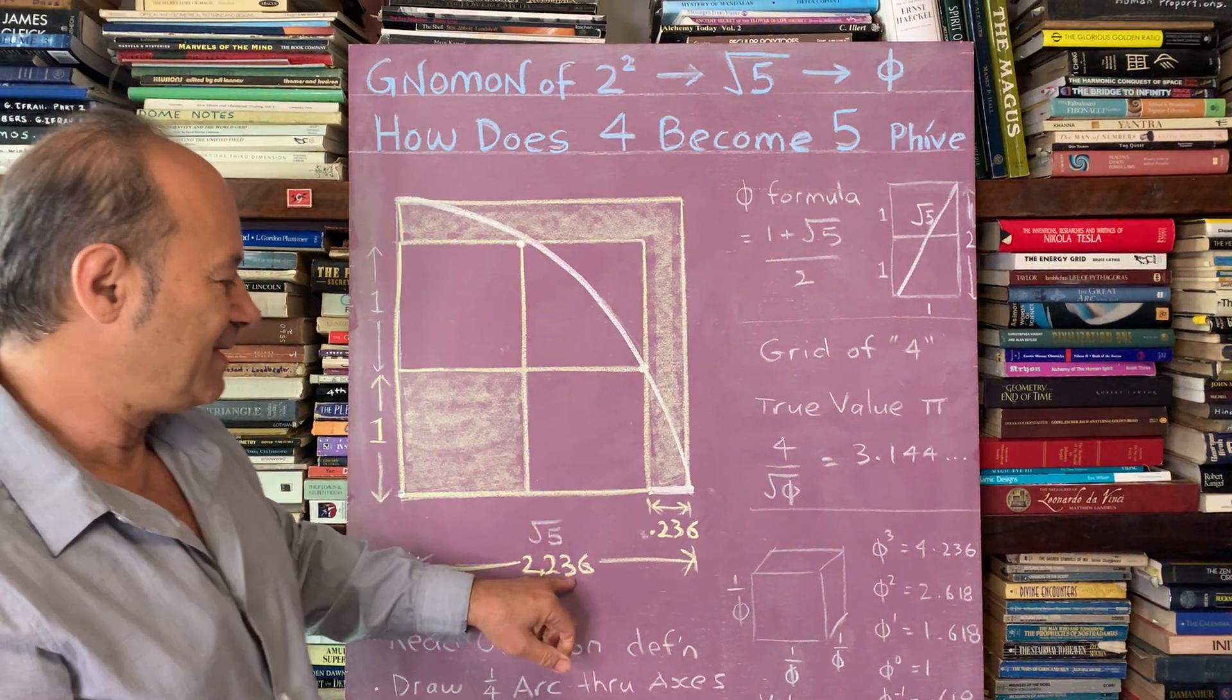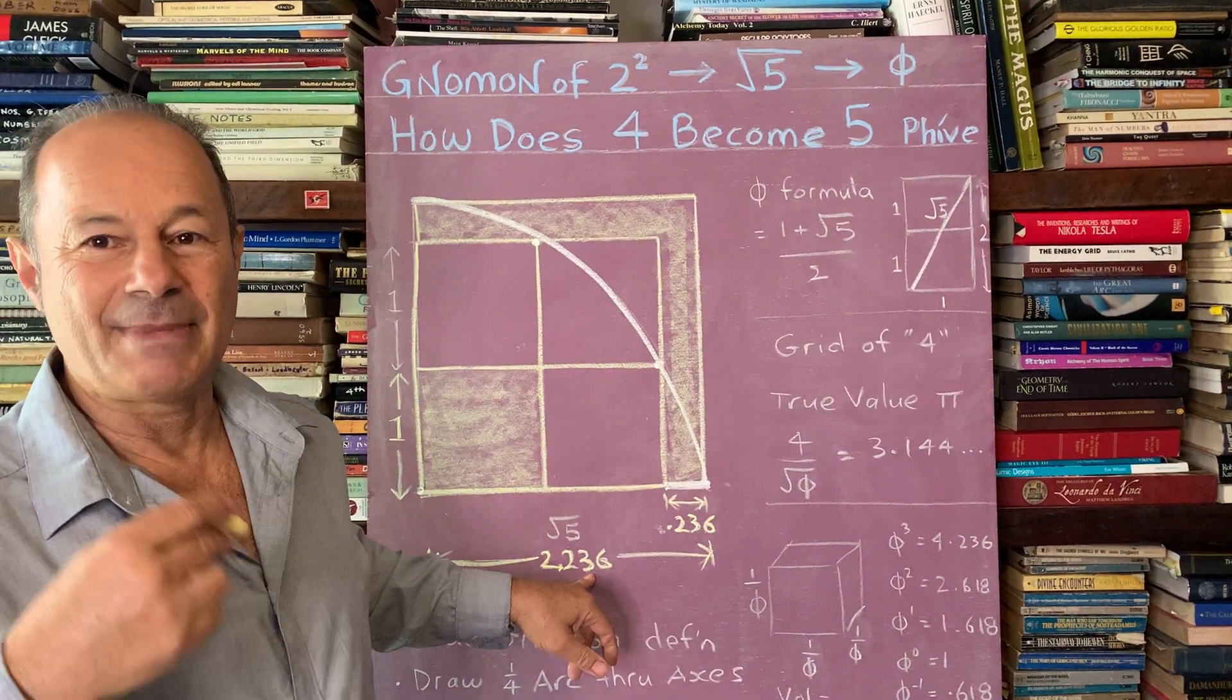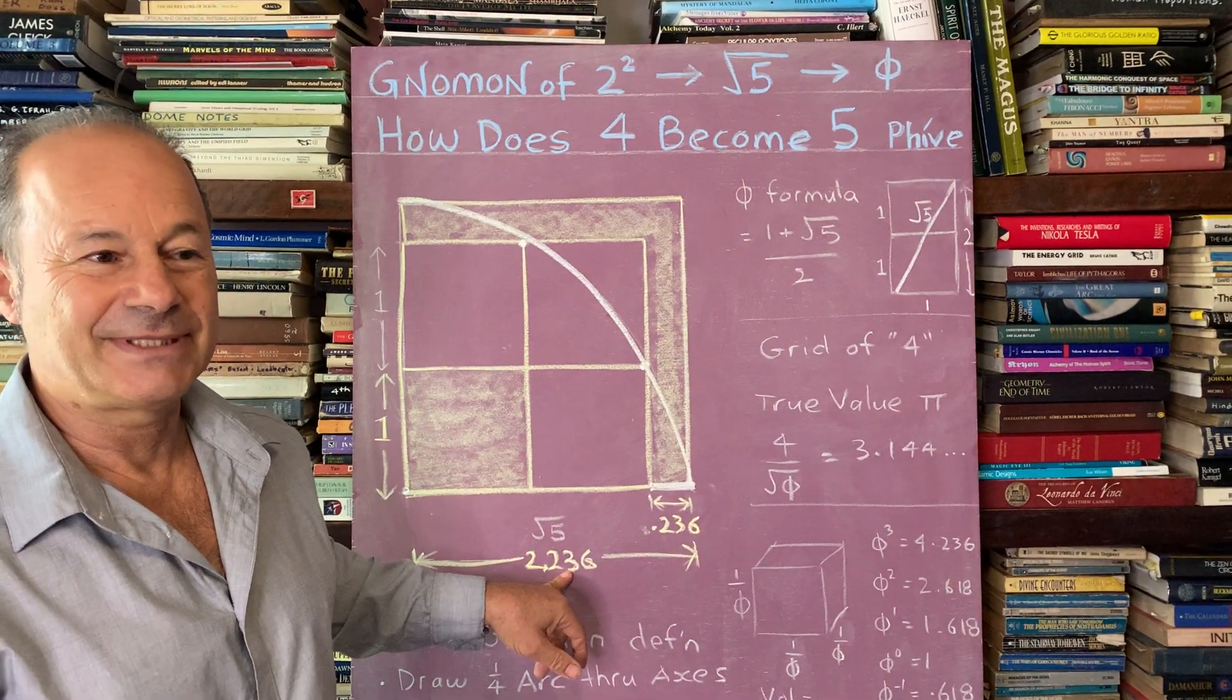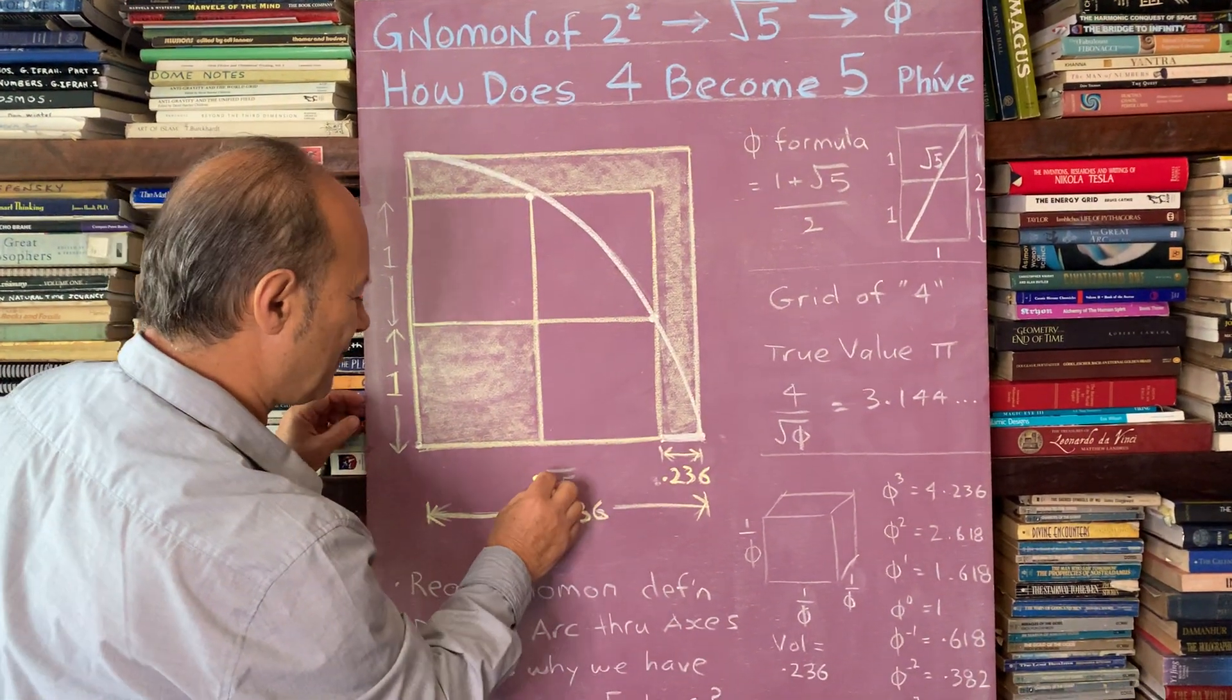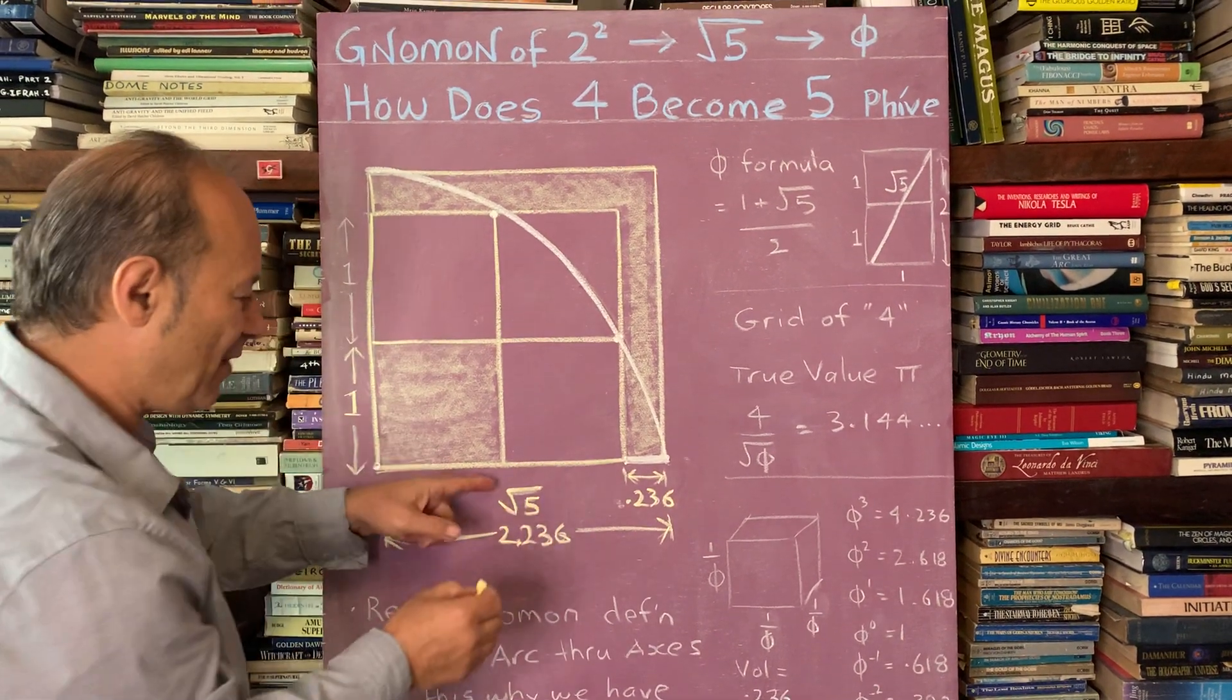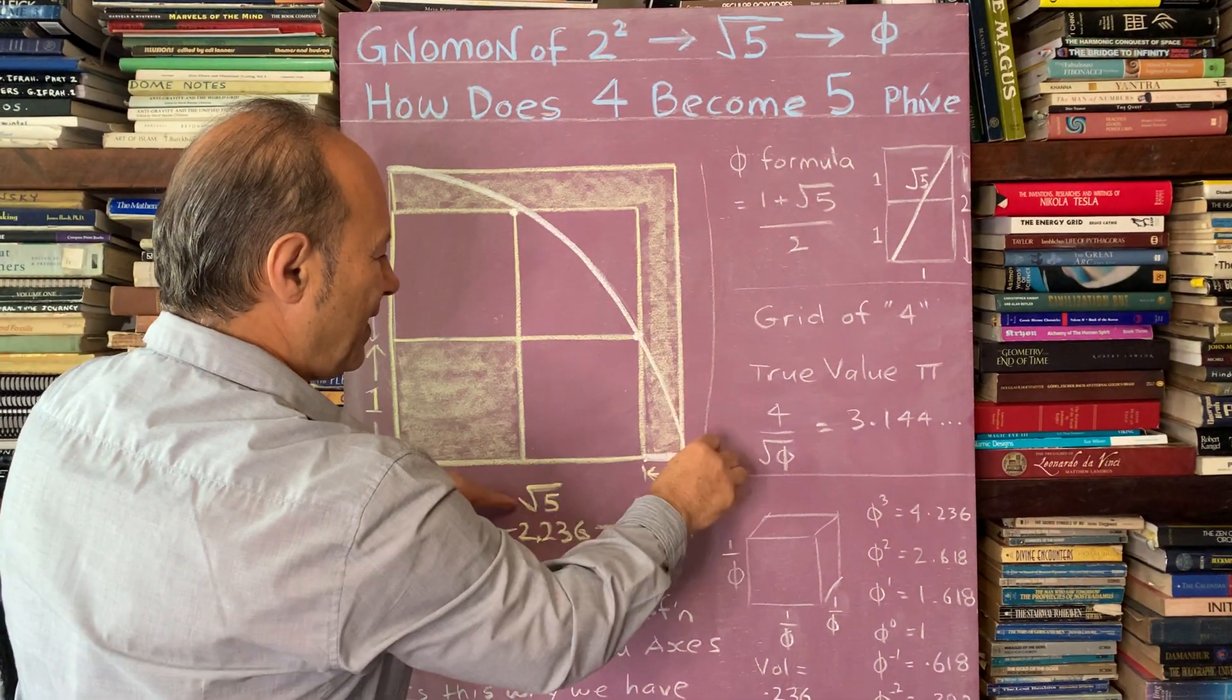2.236 is a very interesting number because when I square that number and multiply that by itself, 2.236 squared equals 5. That's what equals 5. So that means this distance here is called root 5. Root 5 is 2.236.